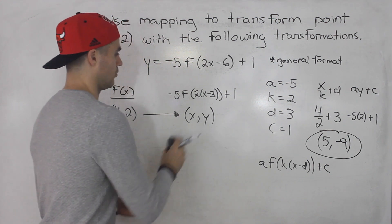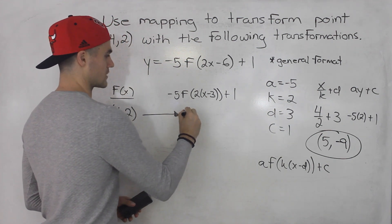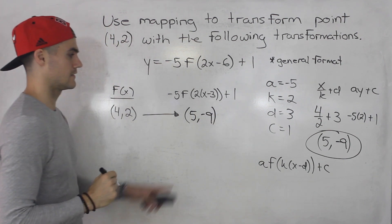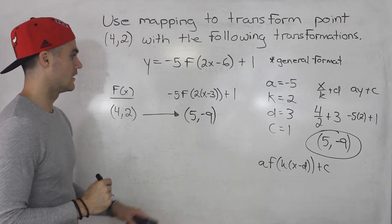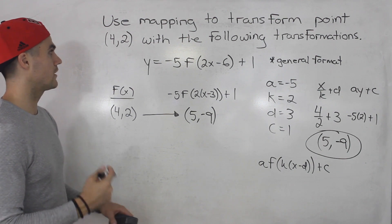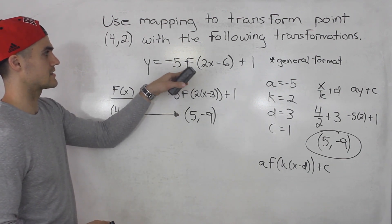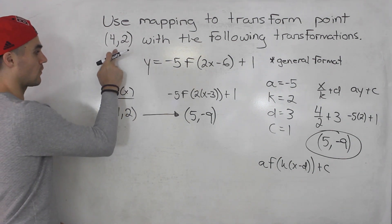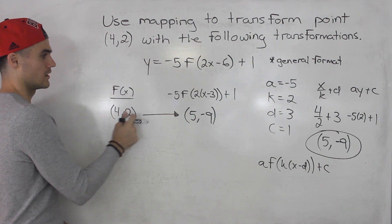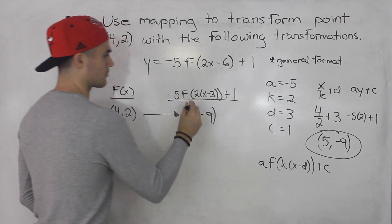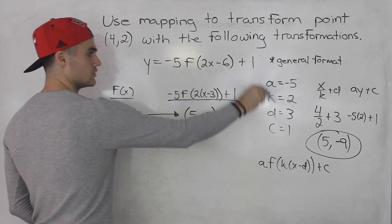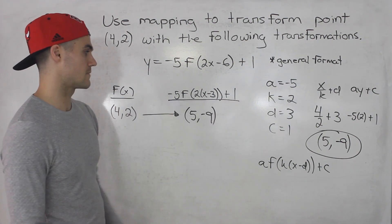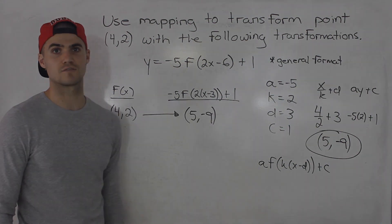So that there is the final answer. The point (4,2) gets transformed to (5, negative 9). That is the final answer. Again, we're not given an actual parent function, this is in general format. It's f of 2x minus 6, but we are told that (4,2) is on the parent function, so then we just have to transform it to this function using that transformation formula and using the transformation values, and we get (5, -9) as the final answer.